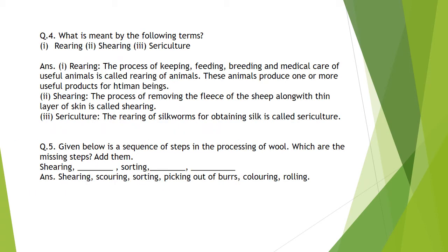Question number 4: What is meant by the following terms — rearing, shearing, sericulture? Rearing is the process of keeping, feeding, breeding, and medical care of useful animals. These animals produce one or more useful products for human beings. Shearing is the process of removing the fleece of the sheep along with a thin layer of skin. Sericulture is the rearing of silkworms for obtaining silk.